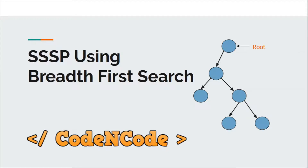Hello guys, this is Code and Code, and this is the 10th lecture of this graph theory series. In this lecture we are going to study best first search, and we will be implementing BFS to calculate SSSP — that is, single source shortest path — in an unweighted graph. There are no weights on the edges; we are talking about unweighted graphs.